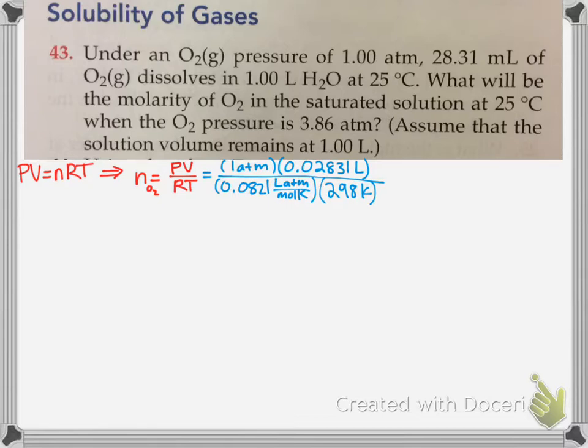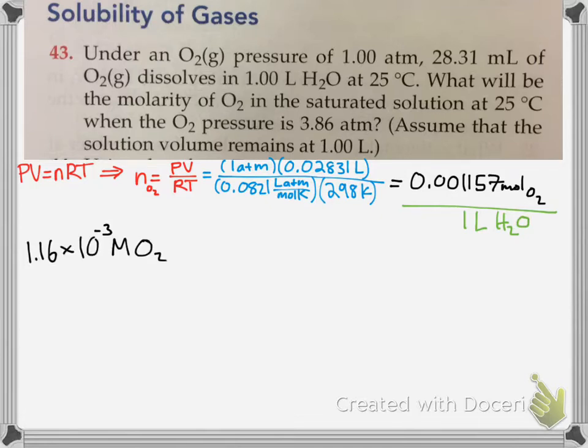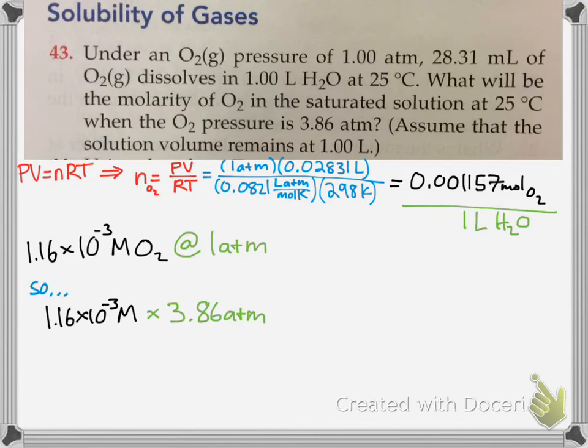This implies that you're manipulating the equation. Use what you have there. Make sure that you convert 28.31 milliliters into liters, and temperature, add 273 to convert to Kelvin. Then you get that many moles of oxygen gas, and it's over a 1 liter solution. That means we have our molarity in 1 liter solution of water at 1 atm. This is the key here because this is at 1 atm, but we're looking for the pressure at 3.86 atm. If this is the concentration of oxygen gas at 1 atm, to find it at 3.86 atm, you simply multiply that, and you will get your new concentration at that new pressure. And that's it. Hope this helped.